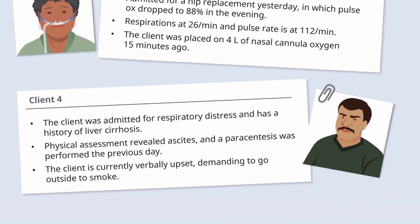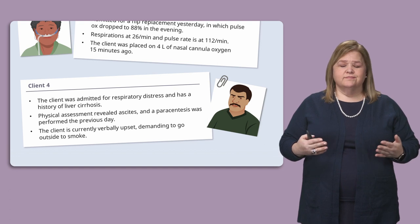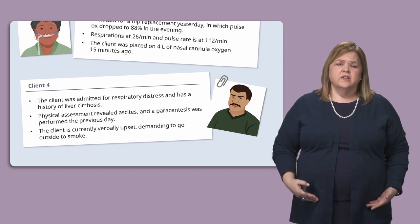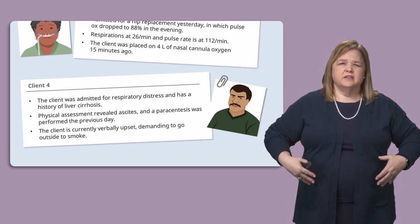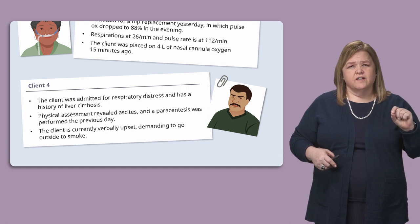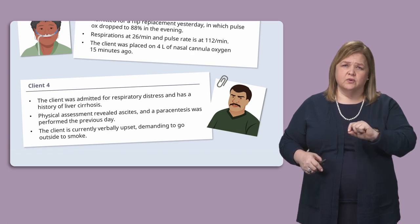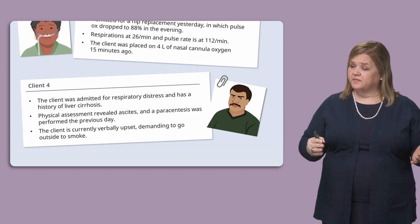Client four was admitted for respiratory distress and has a history of cirrhosis of the liver. Physical assessment reveals ascites, which makes it difficult to breathe due to fluid in the abdomen. They did a paracentesis yesterday. The client is currently verbally upset, demanding to go outside and smoke. We recognize that's tough for them. If I compare client four to client three, who is the highest priority? You decide.